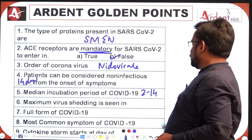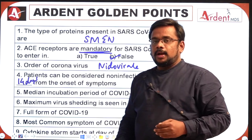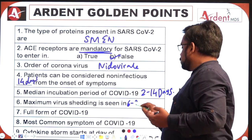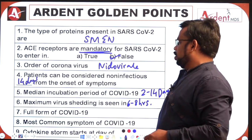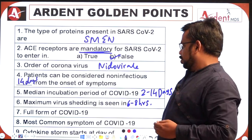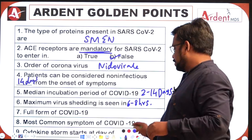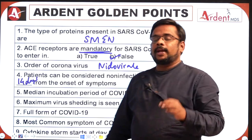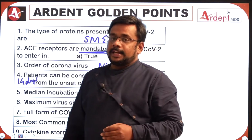The median incubation period of COVID-19 is 2 to 14 days. Maximum virus shedding is seen six to eight hours before the onset of symptoms. Full form of COVID-19 is Coronavirus Disease. The most common symptom of COVID-19 is fever. The cytokine storm starts at day 6.